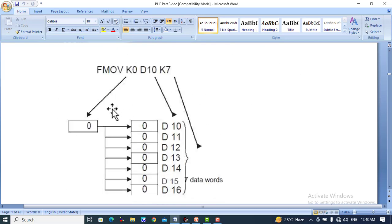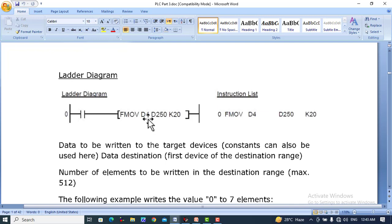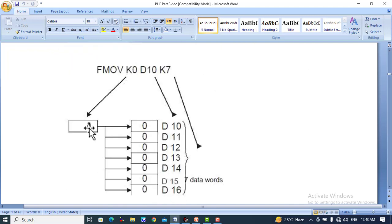It can be illustrated easily with this example. If this one is replaced with FMOV K0, D10, K7, then K0 is the zero value. Here D4 may consist of 16 bit value. K0 is a zero value.